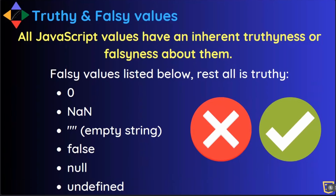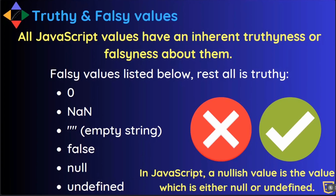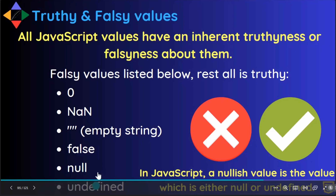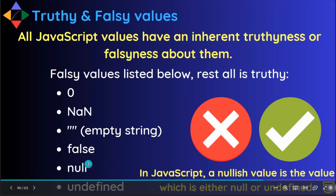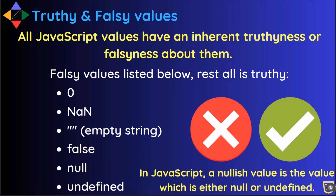In JavaScript, null and undefined have a special name — they are called nullish values. A nullish value is one that is either null or undefined. These always hold false in their inherent truthiness and falseness — their boolean value is always false.